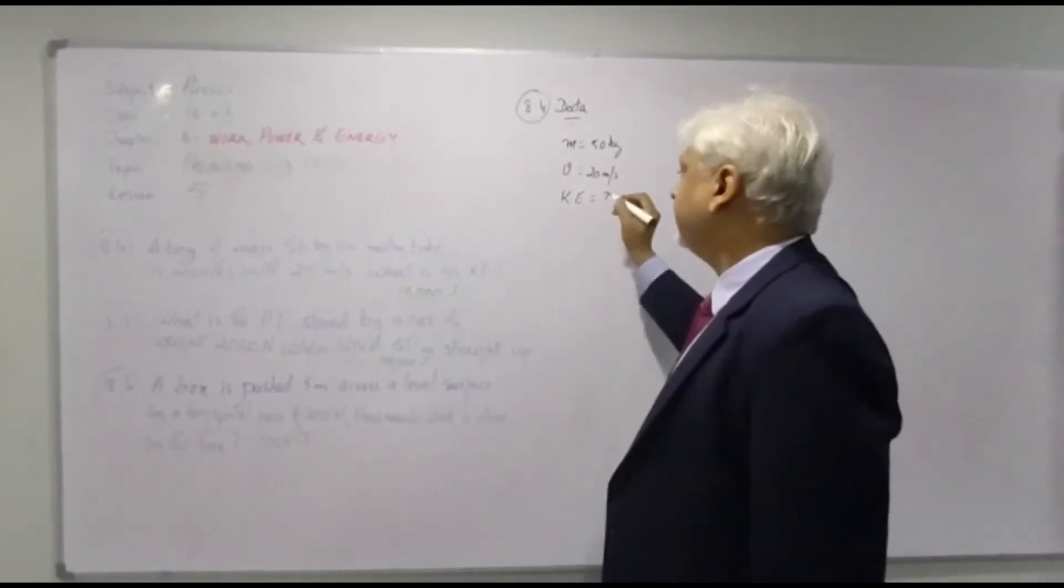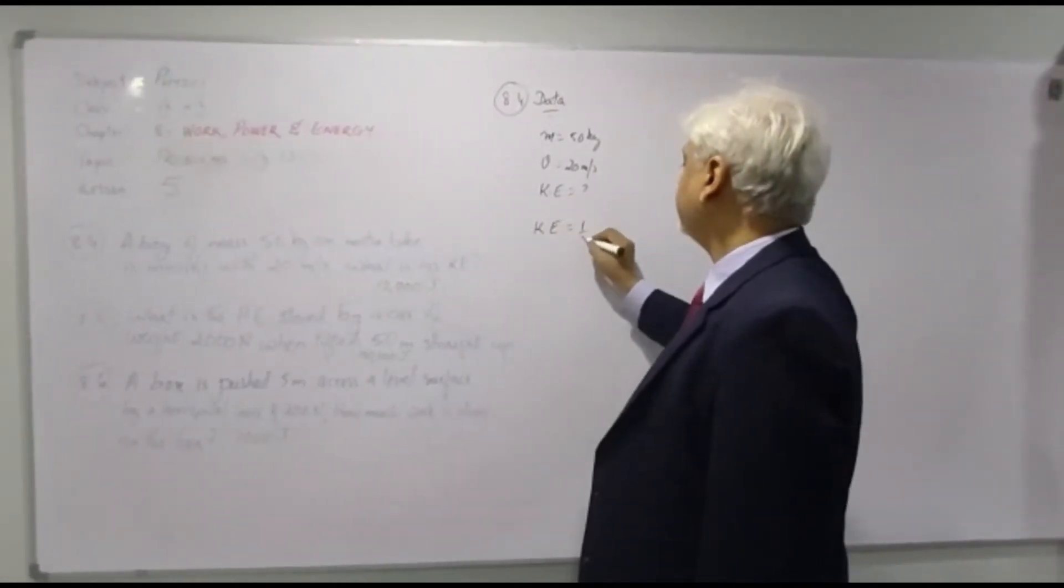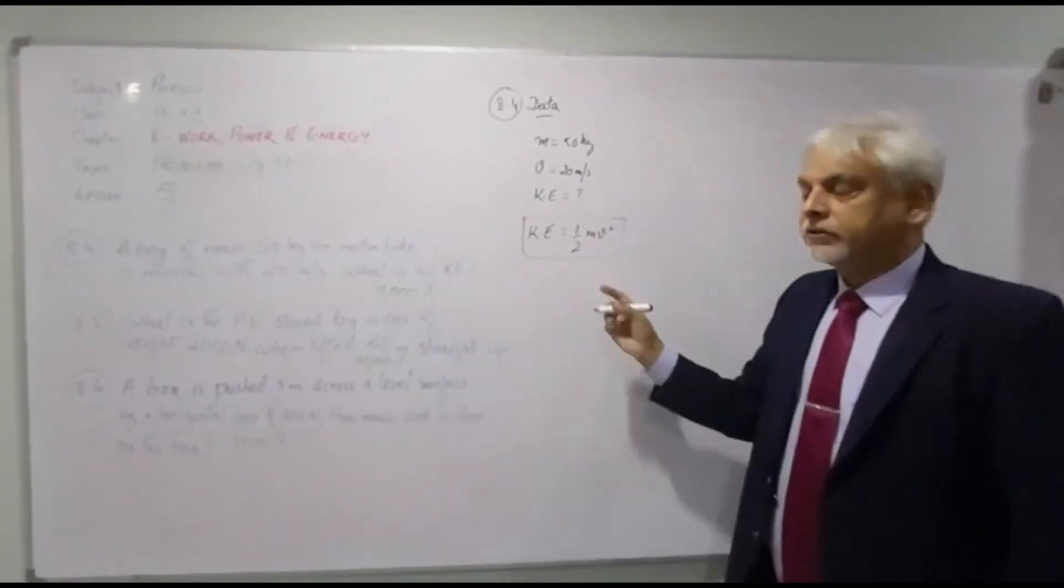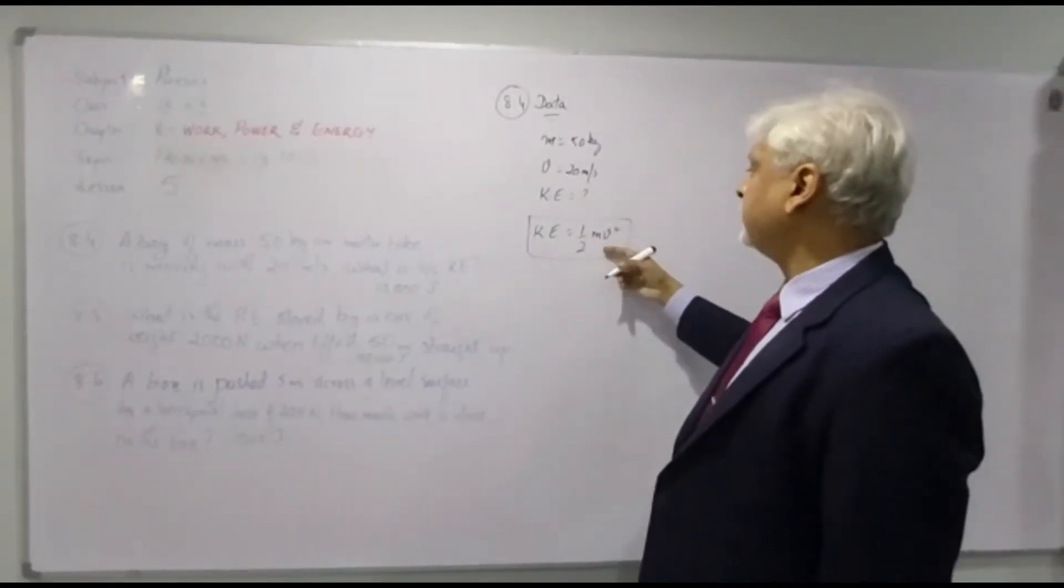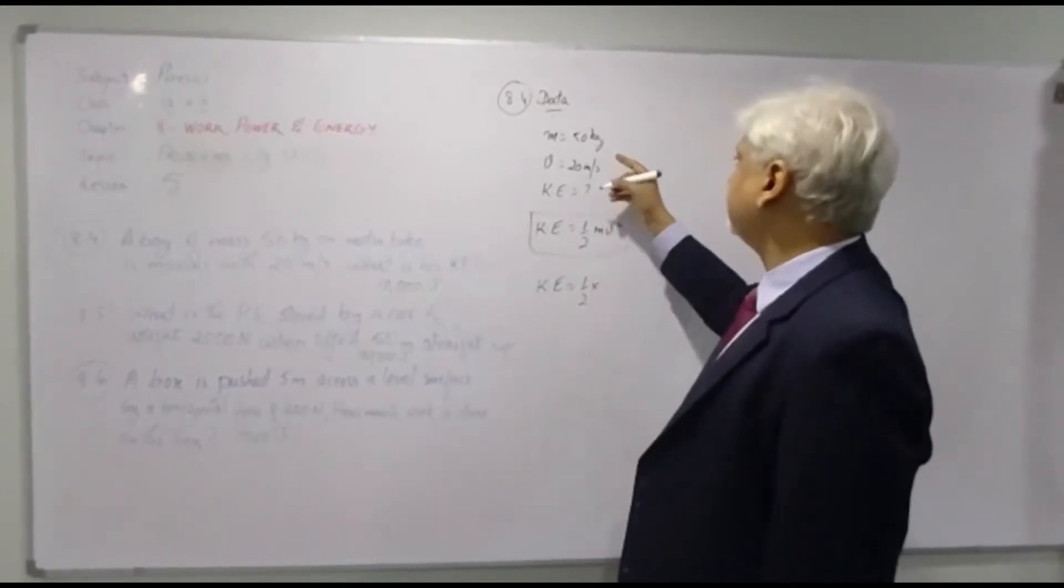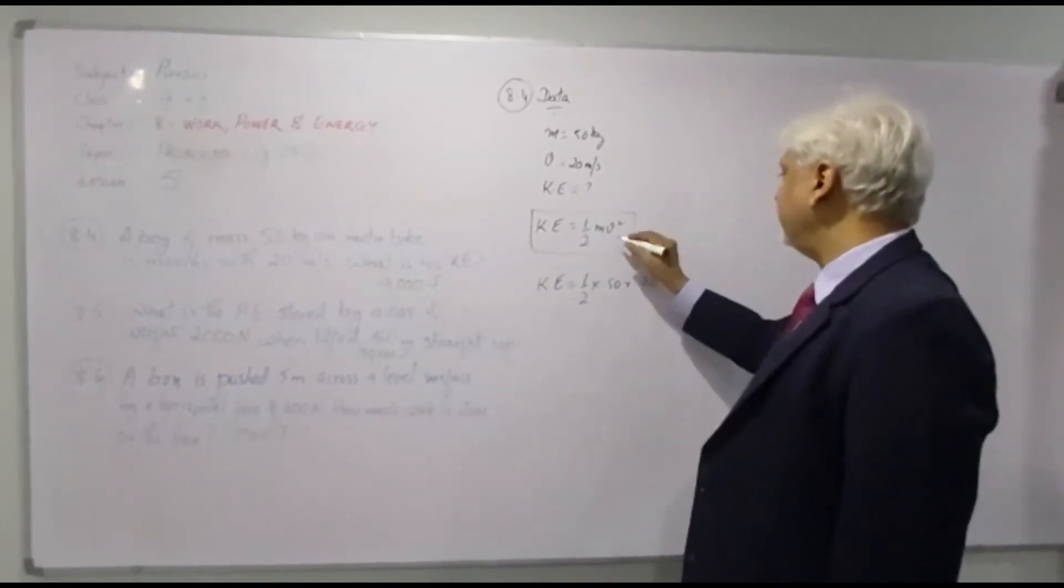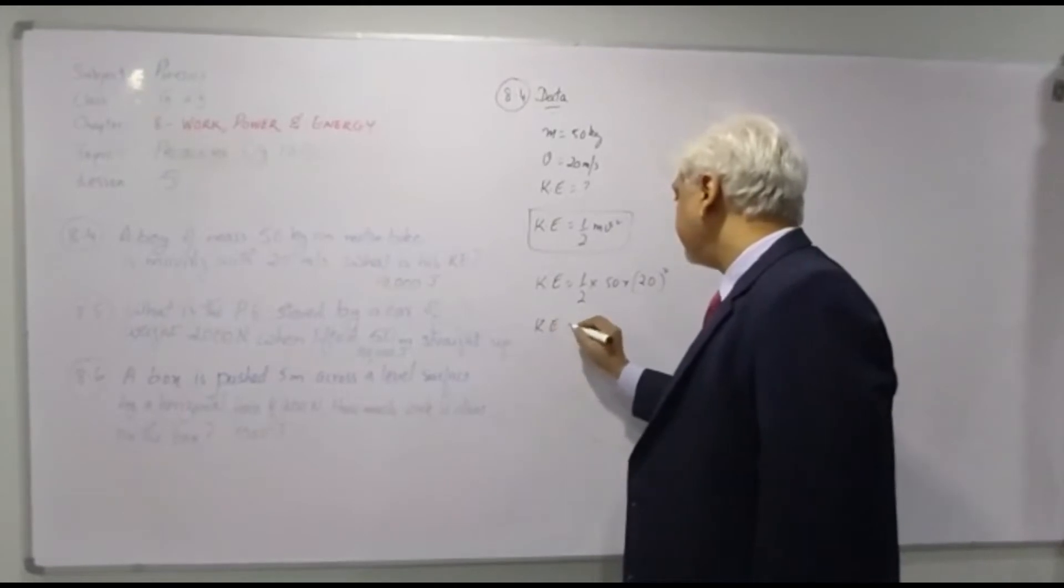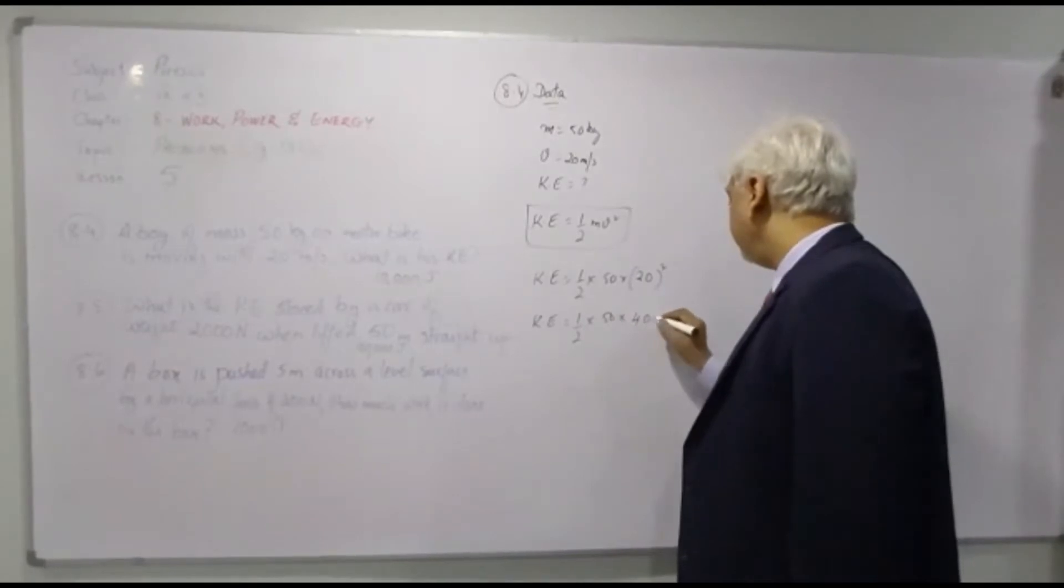You need to find the kinetic energy so the kinetic energy we have a formula that is equals to half mv squared. I did derive this equation in my previous lesson so we have this formula. Now let's feed in the values. Kinetic energy is equals to half, mass is 50 kilograms and the speed of the motorbike is 20 meter per second so V squared, we have to square this. So we have kinetic energy is equals to half times 50 times 20 the whole square will give you 400.